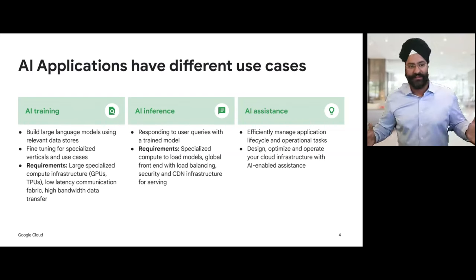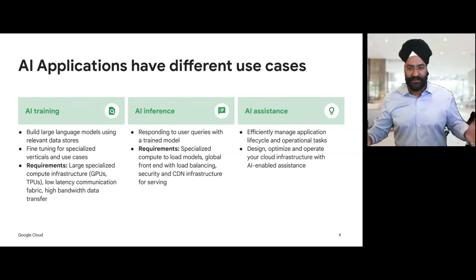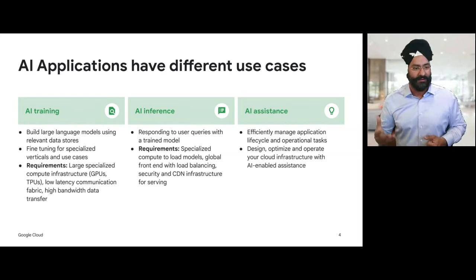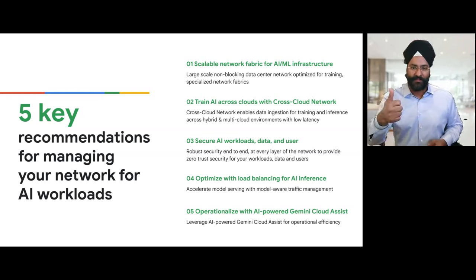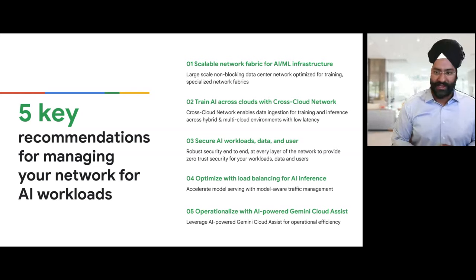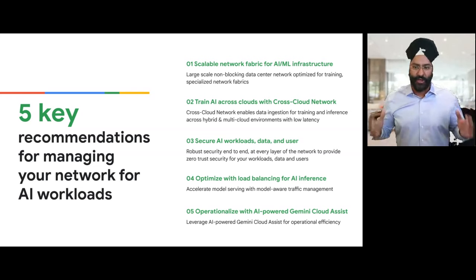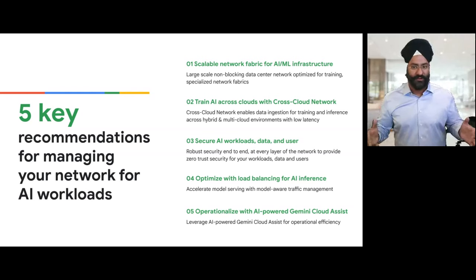Obviously in all three types of use cases, network is the fabric. Networking has to work — it's a significant enabler to help you pave the way. We're going to talk about what networking requirements are needed to help you manage your network from an AI workload. So here are five key recommendations. The first one: building a scalable network fabric that is built and optimized for AI/ML — a high capacity non-blocking data center network optimized for training, essential to ensure optimal job completion times during model training.